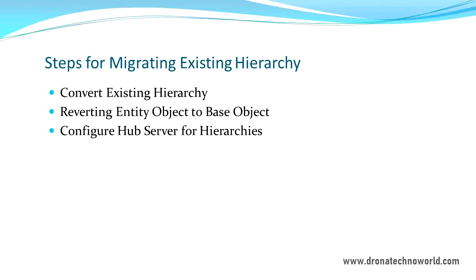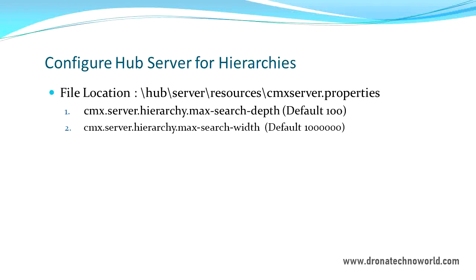The next step is reverting the entity object in the MDM hub to its base object. The third step is configuring the properties file under the hub server. The property file location is hub/server/resources/cmxserver.properties, and in this cmxserver.properties we have to introduce two properties: one is hierarchy max search depth and the other is hierarchy max search width. These two properties will be used if you are going to call the hierarchy using REST APIs. The default value for search depth is 100 and for max search width is around 1 million — pretty high values, but you can increase them as per your business need.